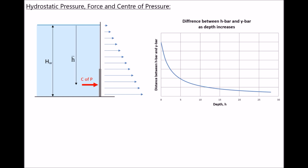With reference to the graph on the right hand side, we see that as depth increases — referring to the distance to the top of our surface, not to be confused with h bar or h w — the distance between the centroid of the shape and the centre of pressure decreases. This is a representation that the deeper we go, or the greater that distance h from the free surface, the closer the centre of pressure gets to the centroid. However, it will always be below the centroid.